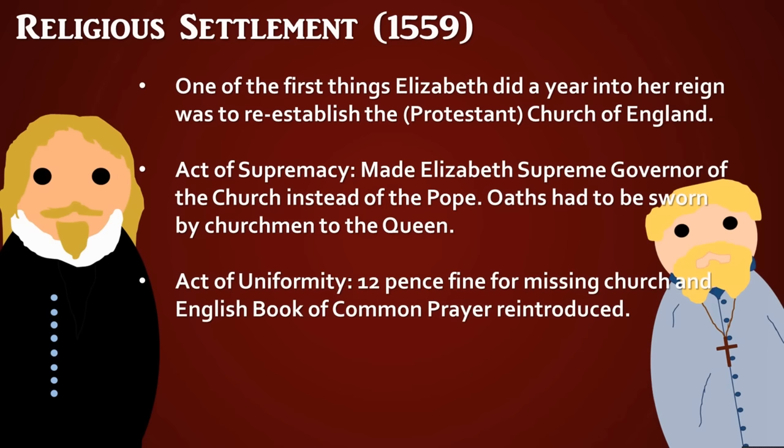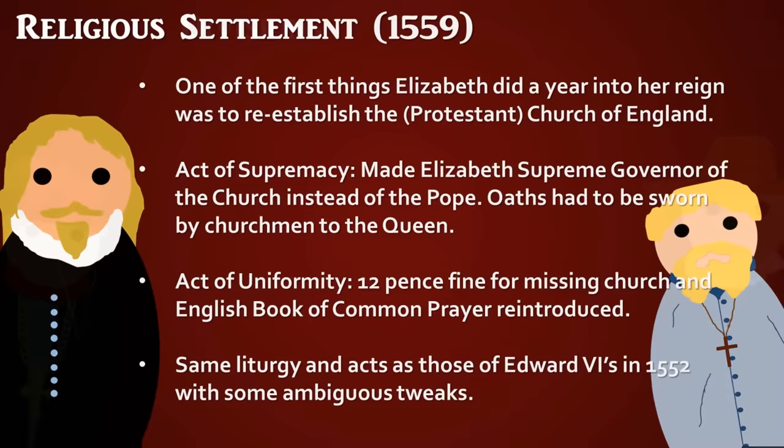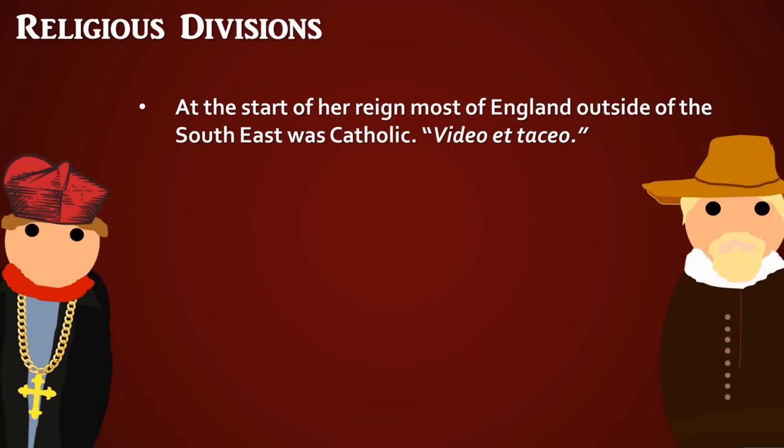The other act was the Act of Uniformity, which imposed a 12 pence fine for missing church — known as recusancy — as well as reintroducing the 1553 edition of the English Book of Common Prayer with some tweaks to make it more ambiguous towards Catholics, such as the removal of the black rubric.